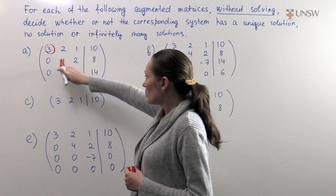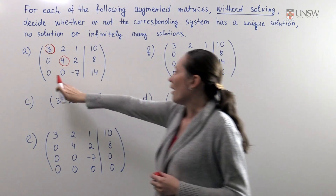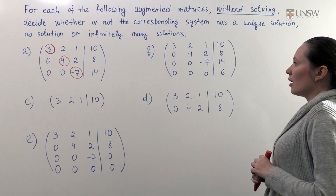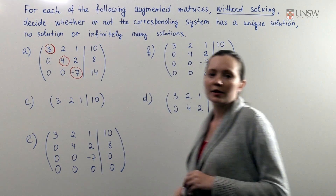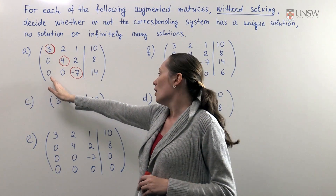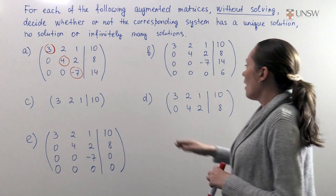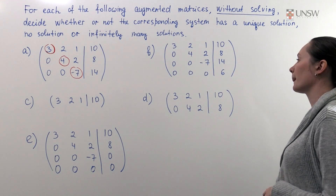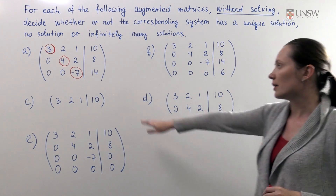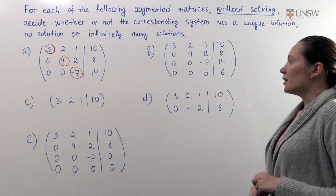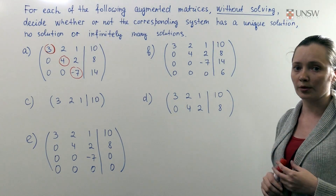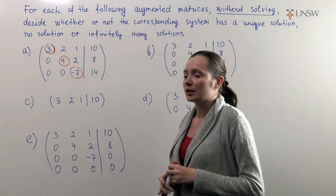On the second row this is the non-zero entry, and on the third row this one. These terms are leading terms, and the columns which contain leading terms we call leading columns. For example, these three columns are leading columns and this column is a non-leading column. The next step is to look at the constant vector. If the constant vector is a leading column, then the system has no solution. In our case the constant vector is a non-leading column.